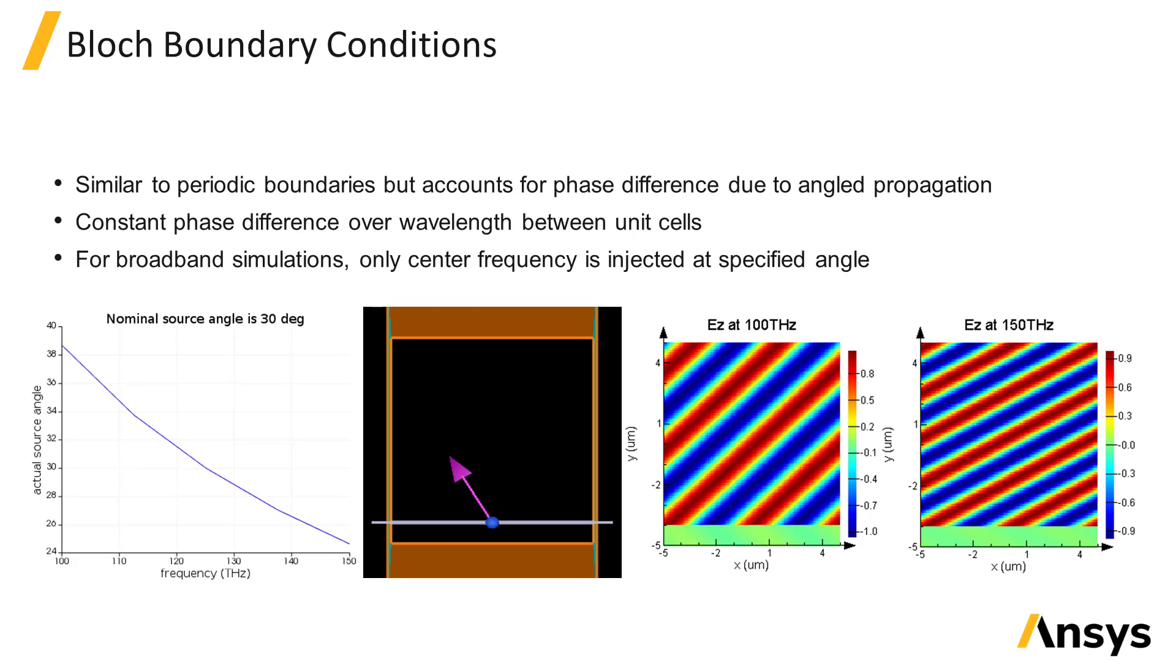Let's go into why we use different source and boundary conditions for angled injection. The Bloch boundary conditions are similar to periodic boundaries, but they take into account the phase difference between each period of the device for the given injection angle of the source.